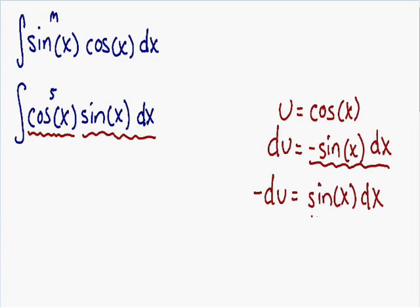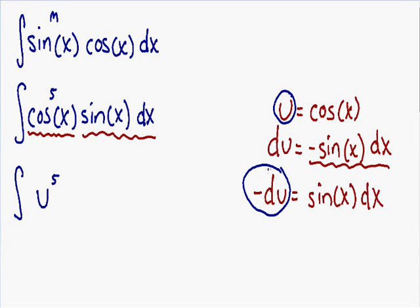Now we have a positive sine of x dx in both our du expression and our integral, so it's going to be easy to plug everything in terms of u. The cosine of x to the 5th becomes u to the 5th, and the sine of x dx equals negative du, so we put a negative sign in front of the integral.